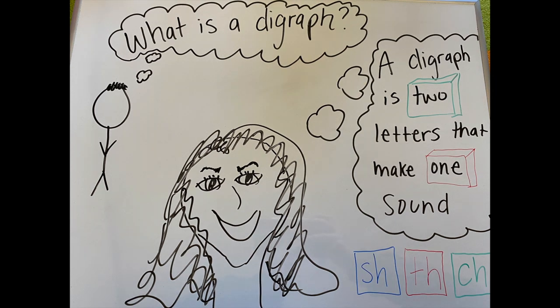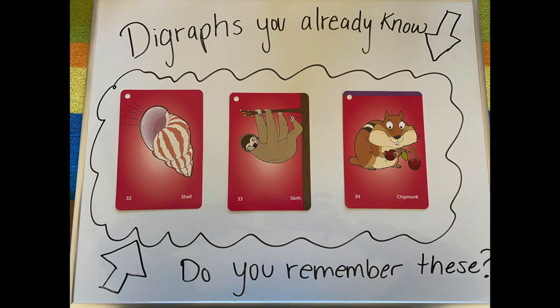You Kipsters are so smart that you already know lots of digraphs. Today we're going to be focusing on some digraphs that you might already know. These digraphs are sh, th, and ch. Do you remember these cards? These are from our Open Court selection. We have the shell card.